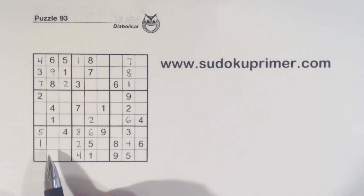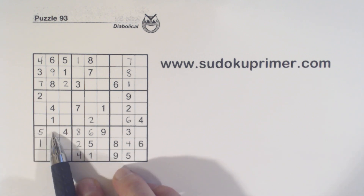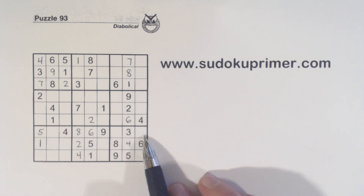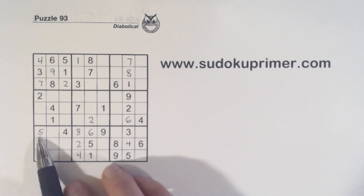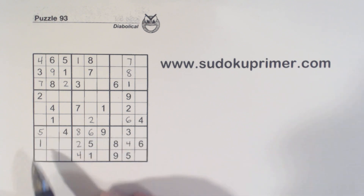Now we're just missing one, two, and seven. Two and seven — one, two, seven — so we can't solve the others yet. We found that five.